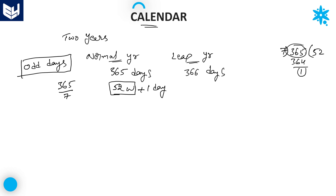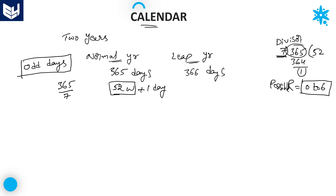Whenever you are dividing any number with 7, the possible remainders are from 0 to 6. For example, 365 divided by 7 gives 52 times, making 364, with a remainder of 1. The possible remainders are always from 0 to 6, as remainders are always less than the divisor. In this way, we can convert any days into weeks.